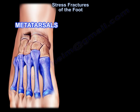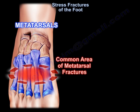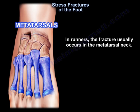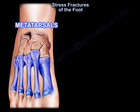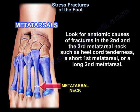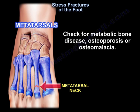Metatarsal stress fractures commonly occur in the metatarsal neck in runners, and in the base of the second metatarsal in dancers. Fracture may result in delayed union; restrict weight bearing for 6 weeks. Look for anatomic causes in the second and third metatarsal neck, such as heel cord tenderness, a short first metatarsal, or a long second metatarsal. Check for metabolic bone disease, osteoporosis, or osteomalacia.